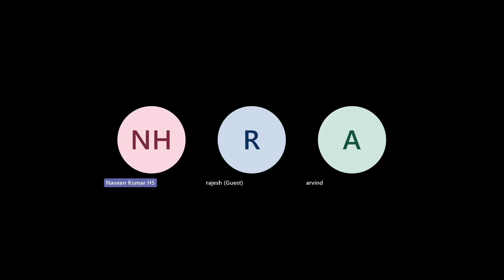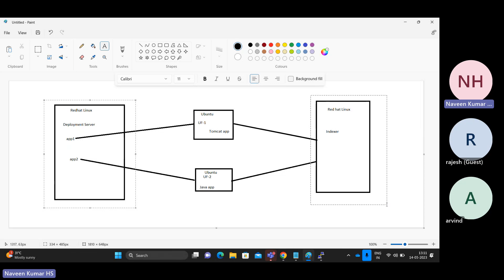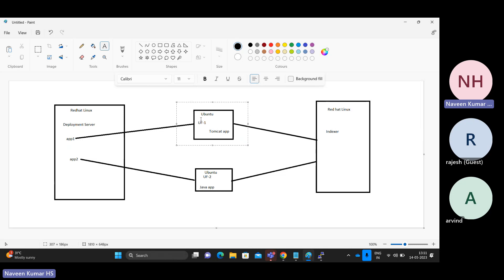In this session, we'll be onboarding data from the universal forwarder to our indexer. In the last two sessions, we configured our deployment server and our indexer, and in the last session we installed the universal forwarder on this particular machine. Now we will have to ingest the data from this universal forwarder to the indexer, and later we'll try to connect the deployment server with the forwarders.